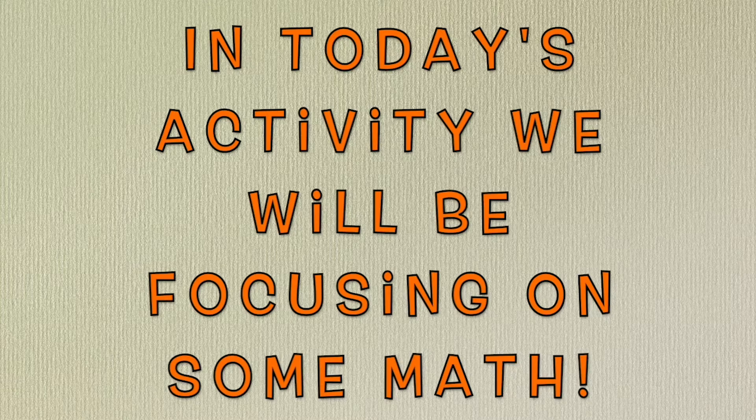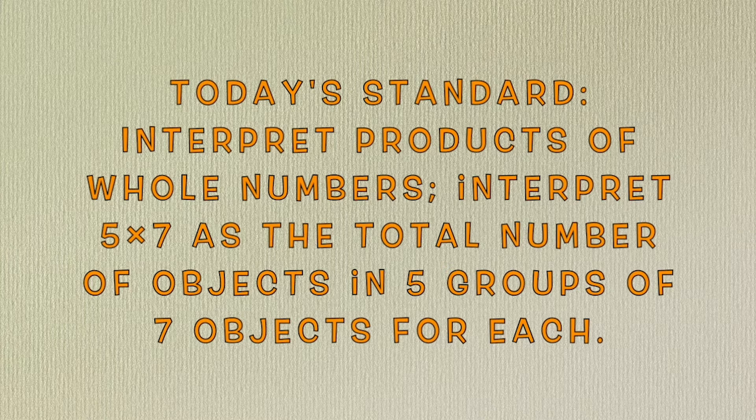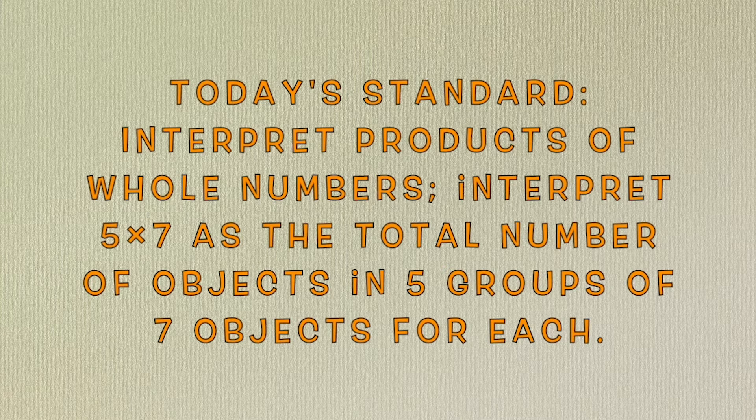Welcome to America Reads. In today's activity we will be focusing on some math. Today's standard is interpret products of whole numbers. Interpret 5 times 7 as a total number of objects in 5 groups of 7 objects for each. Let's get started.